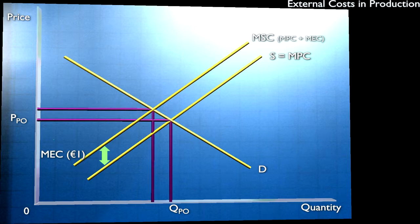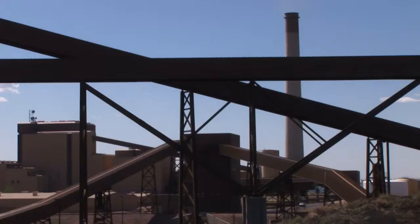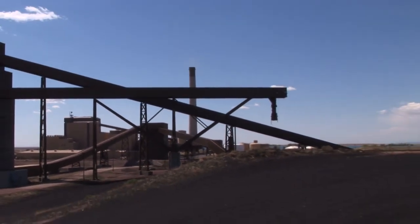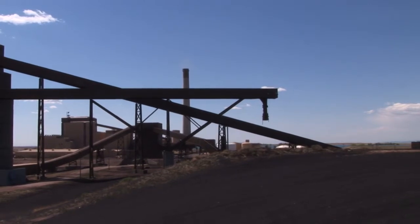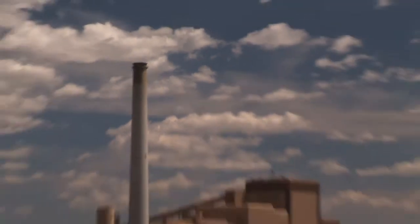That is to say, at a higher price PSO and a lower output QSO. Although those units of output between QSO and QPO are worth producing from a private perspective, when we take into account the social costs, they are simply not worth it. Society's well-being would be increased if we reduced output and raised the price of these kinds of goods where there are externalities in production.